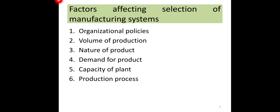To summarize: if the demand volume is greater than the plant capacity, then mass manufacturing system should be selected. And if demand is less than the plant capacity, then batch manufacturing system should be selected. So volume of production is a very important factor — it depends on how much quantity you are going to produce and how much demand you have for your product.